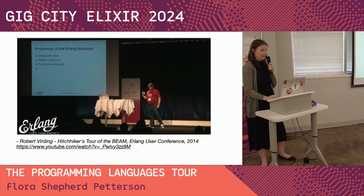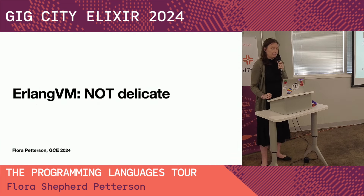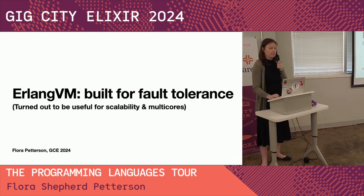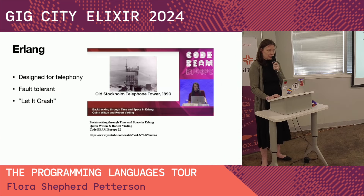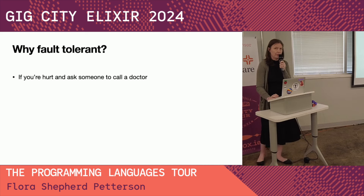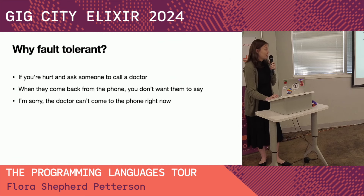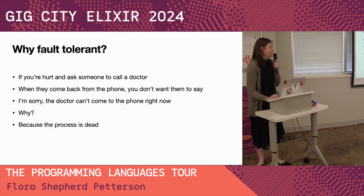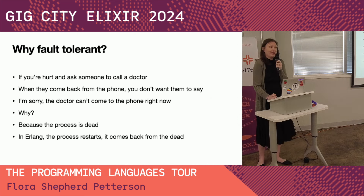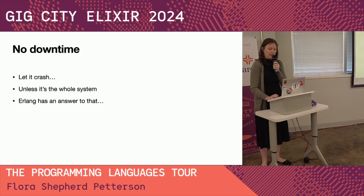Back to Erlang. Key to the Erlang VM, as we all know, is that it's not delicate — it's very fault tolerant, which is why it's so useful for scalability. What does fault tolerance mean? It means if you're hurt and you ask someone to call a doctor and they come back saying the doctor can't come to the phone right now because the process is dead — that's okay. In Erlang, the process restarts, it comes back from the dead. There's no downtime. Let it crash — but not the whole system.